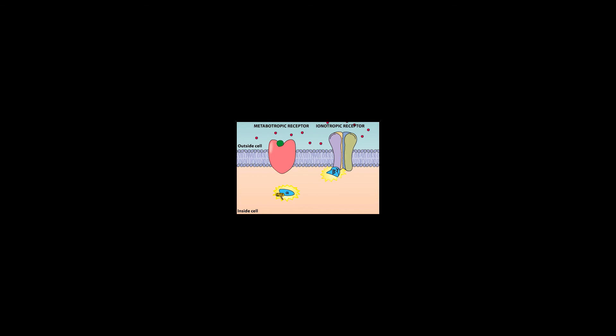For example, the G-protein may interact directly with ion channels, causing them to open or close. Activated G-proteins may also bind to other effector proteins such as enzymes that make intracellular messengers mediating a variety of responses in the target cell. The activation of metabotropic receptors typically produces much slower responses, ranging from hundreds of milliseconds to minutes or even longer. A given transmitter may activate both ionotropic and metabotropic receptors to produce both fast and slow postsynaptic potentials at the same synapse.